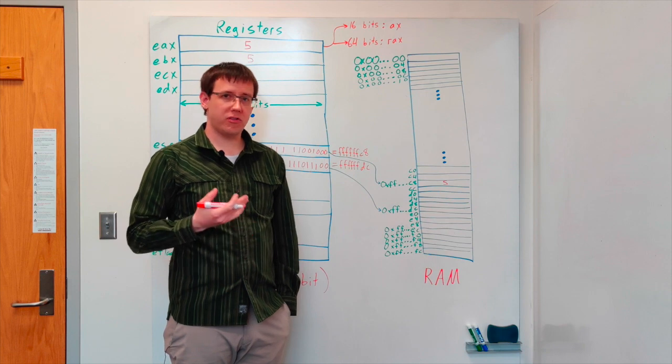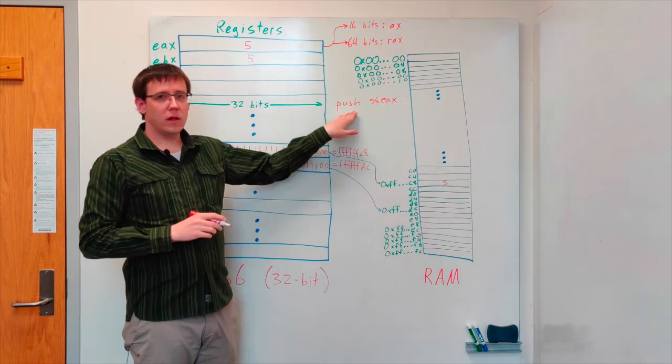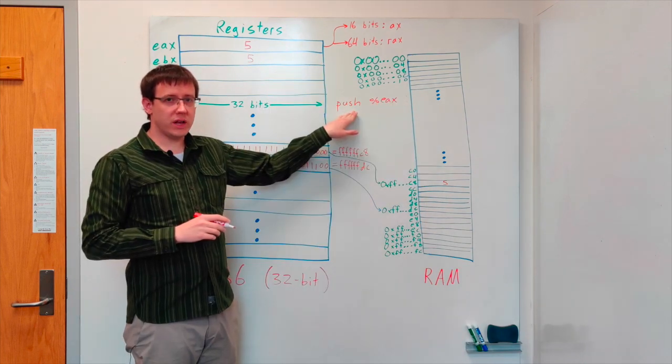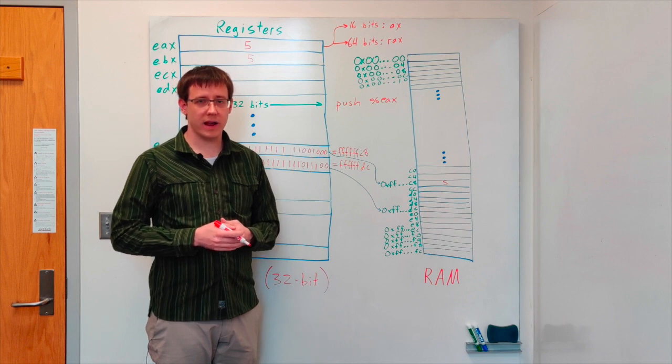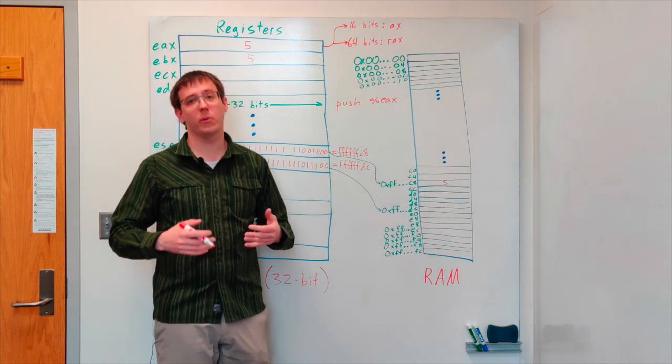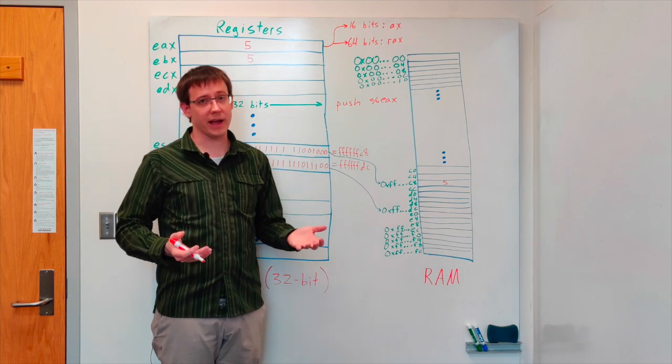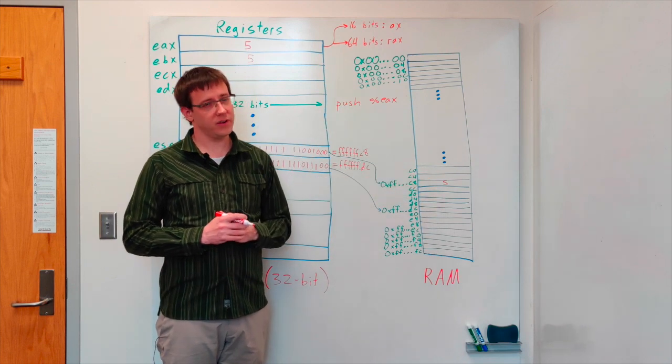We also have a couple of special purpose instructions for manipulating the stack. The push instruction puts data on top of the stack. We can think of the ESP register as pointing to the top of our entire function stack. So if we want to put data on top of the stack, we need to move the stack pointer up and then put data at the new top of the stack.